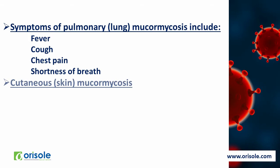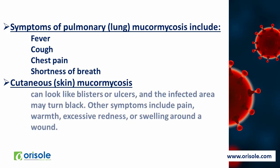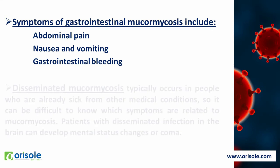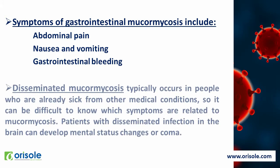Cutaneous or skin mucormycosis can look like blisters or ulcers and the infected area may turn black. Other symptoms include pain, warmth, excessive redness or swelling around the wound. The symptoms of gastrointestinal mucormycosis include abdominal pain, nausea and vomiting, and gastrointestinal bleeding. Disseminated mucormycosis typically occurs in people who are already sick from other medical conditions, so it can be difficult to know which symptoms are related to mucormycosis. Patients with disseminated infection in the brain can develop changes in mental status or may lead to coma.